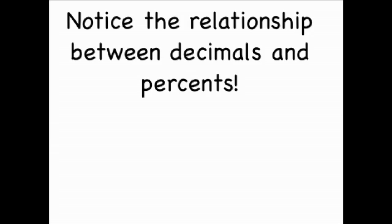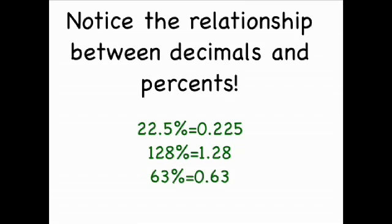Notice the relationship between decimals and percents. 22.5 percent numerically is 0.225 — the decimal moved two spaces to the left when converting from percent to its numerical value. Similarly, 128 percent is 1.28 and 63 percent is 0.63 — the decimal moved two spaces to the left in each case.